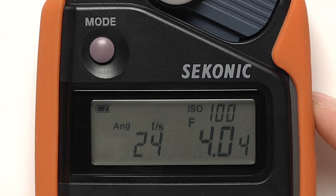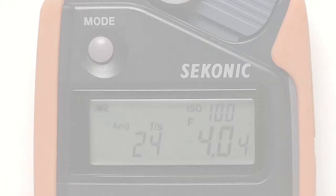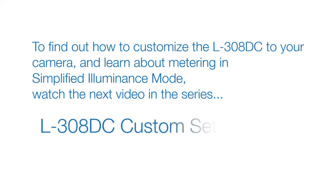Pressing the meter button now will display a new reading. To find out how to customize the L308 DC to your camera and learn about metering in simplified illuminance mode, watch the next video in the series: L308 DC custom settings.